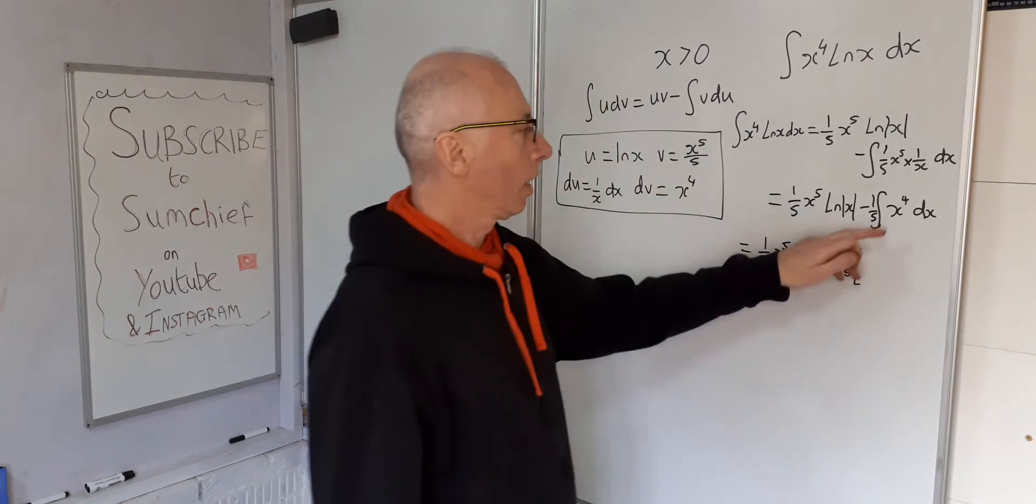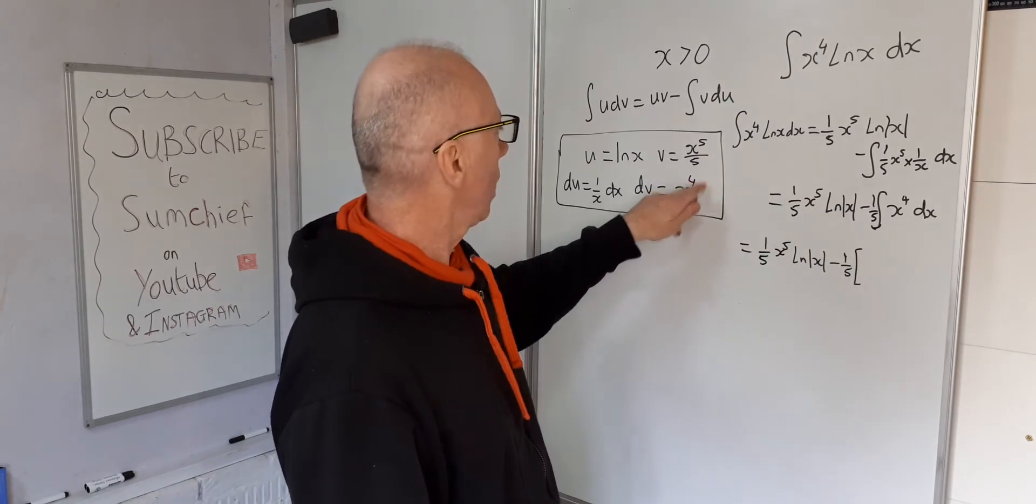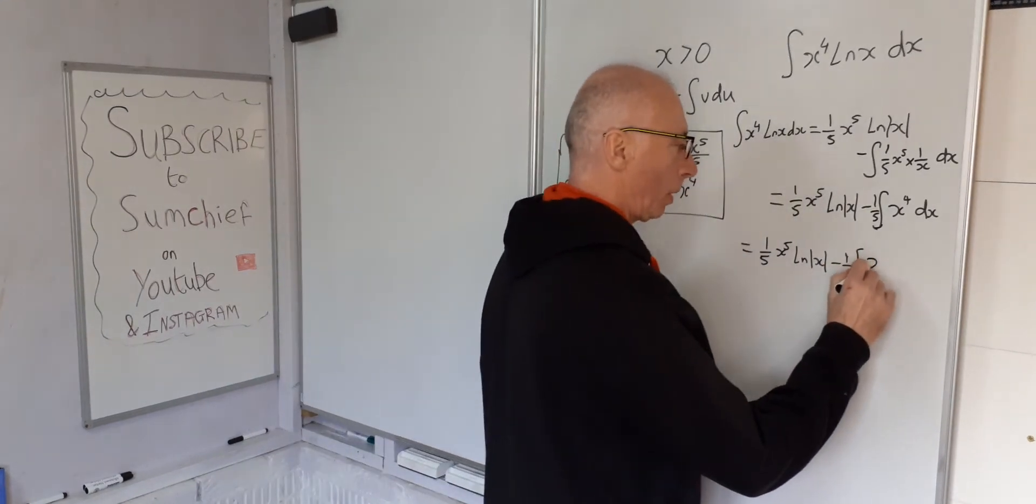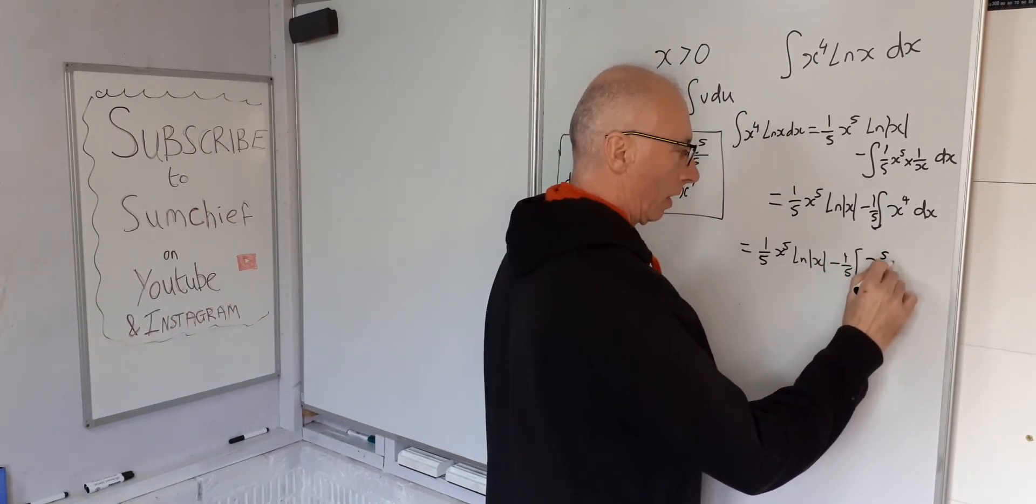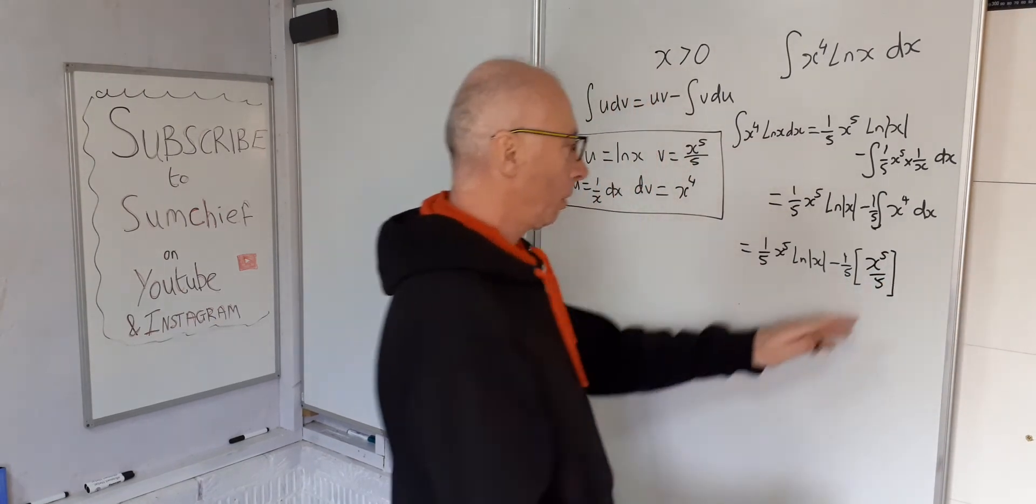Times integral of x to the 4. Well that's x to the 5 over 5. As we did here. So that's just repeating that. And that's that. And then we have the plus c, but we'll come to that in a minute.